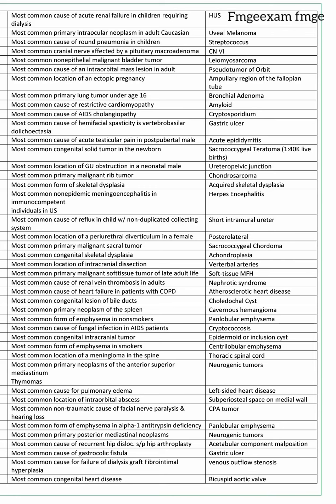Most common primary lung tumor under age 16 is bronchial adenoma. Most common cause of restrictive cardiomyopathy is amyloid. Most common cause of AIDS cholangiopathy is Cryptosporidium.